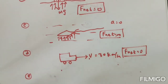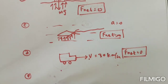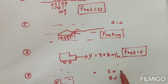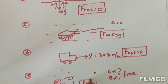Question (e): A high-speed electron in space, far from material objects and free from electric and magnetic fields. Here, we consider one electron — there is no electric field, no magnetic field, and also no gravitational field. So the net force is zero.